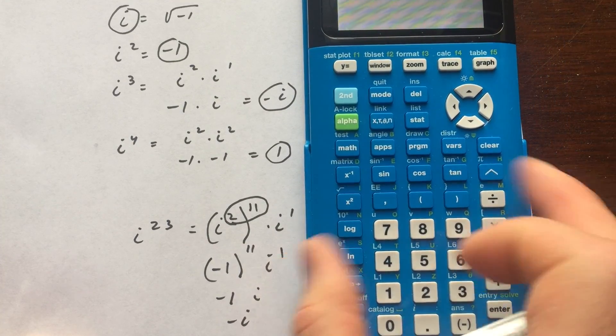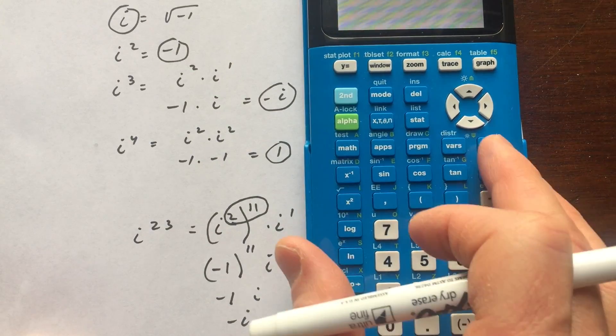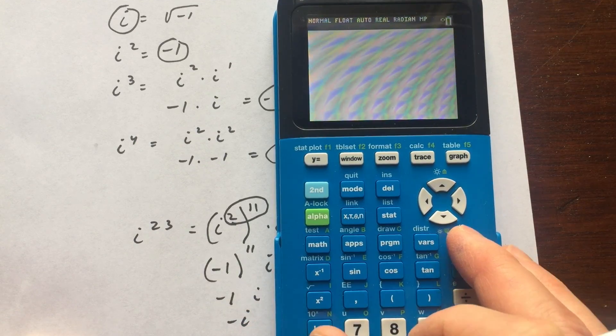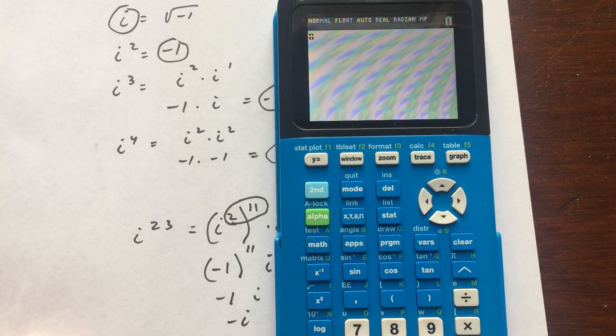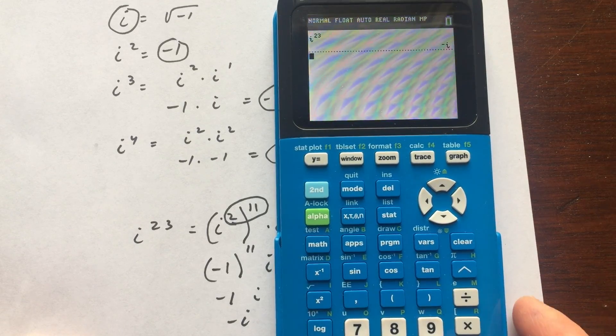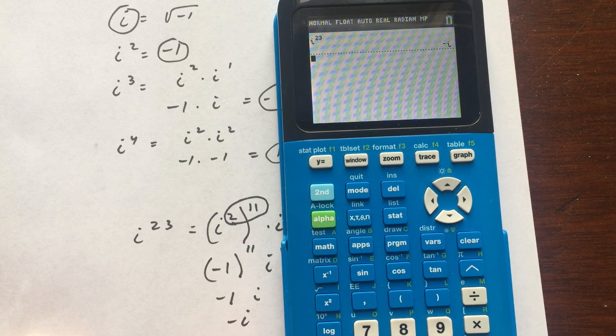Let's see if we can verify that. So I'm going to press the 2nd key. I'm going to press i down here at the bottom. And I'm going to use the caret key. I'm going to raise it to the 23rd power. Looks like I typed that in already. Let me do it again. So 2nd i raised to the 23rd power. Enter. And you can see it's giving us negative i. Same thing we got here at the bottom. So that's all you have to do.